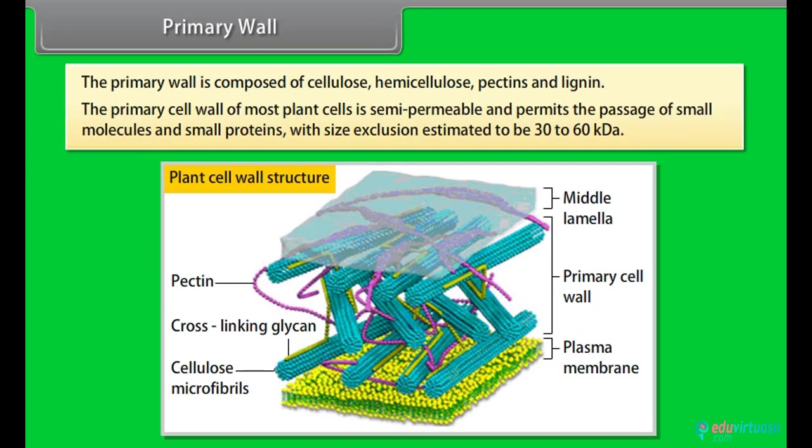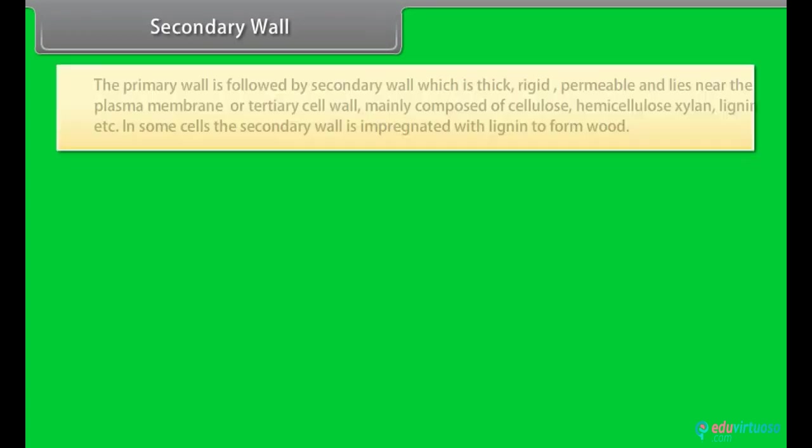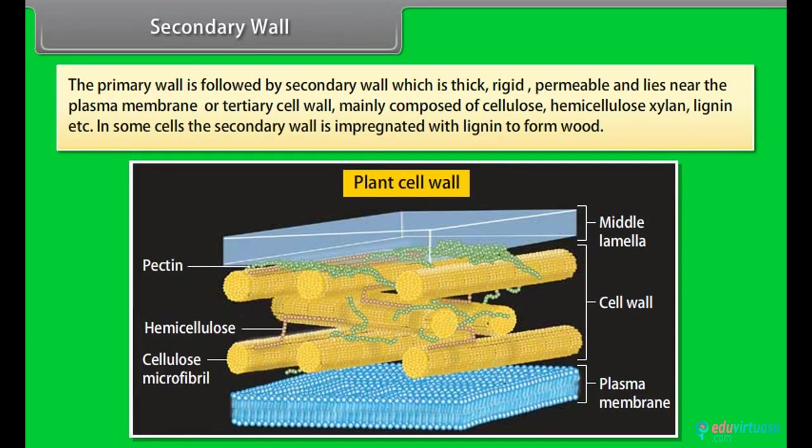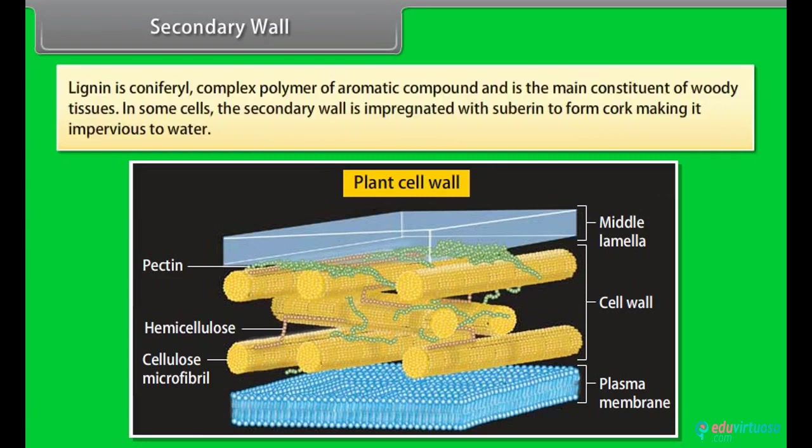Secondary wall: The primary wall is followed by secondary wall which is thick, rigid, permeable and lies near the plasma membrane or tertiary cell wall. Mainly composed of cellulose, hemicellulose, xylem, lignin, etc. In some cells, the secondary wall is impregnated with the lignin to form wood. Lignin is coniferyl, complex polymer of aromatic compound and is the main constituent of woody tissues. In some cells, the secondary wall is impregnated with suberin to form cork making it impervious to water.